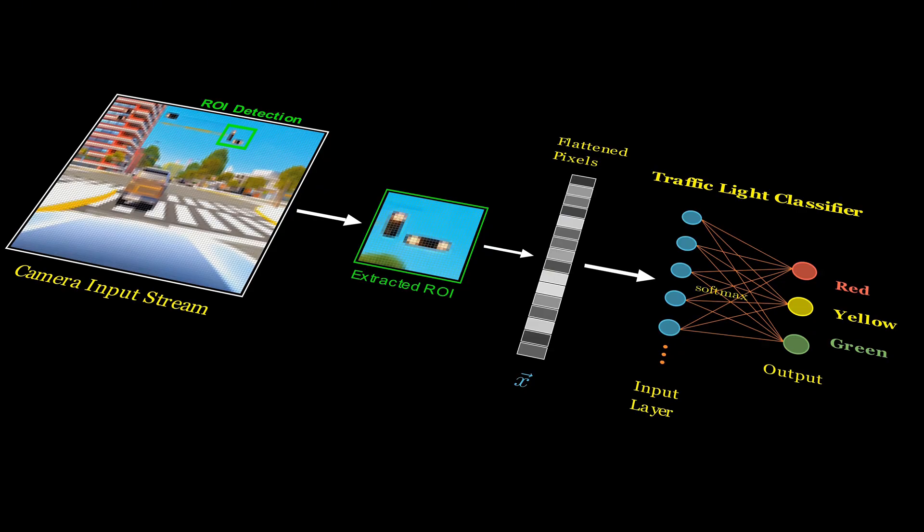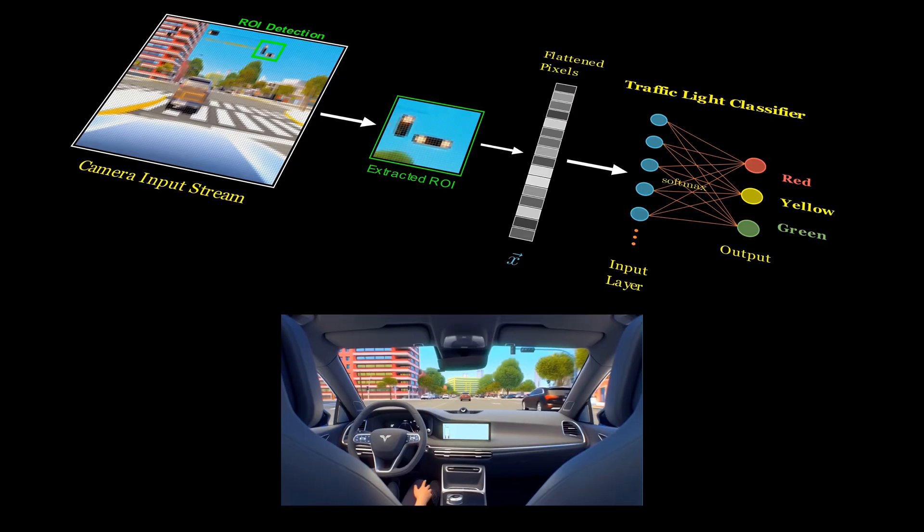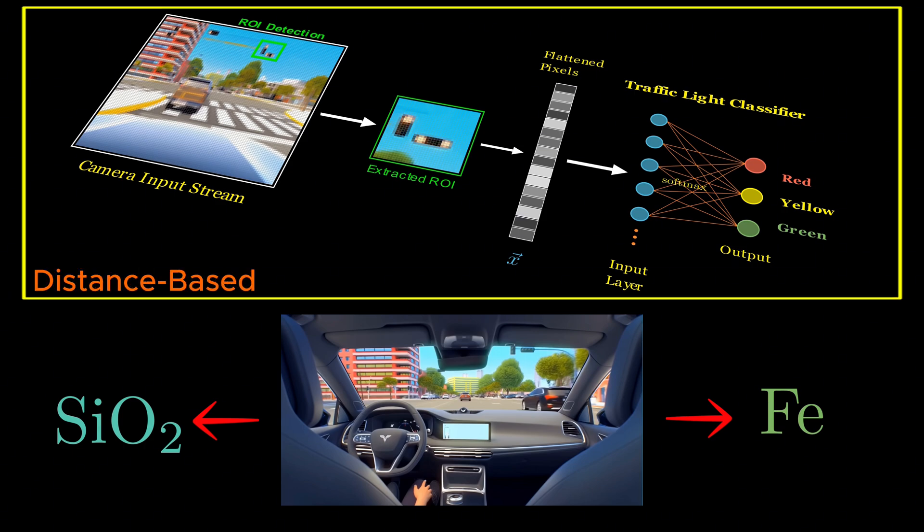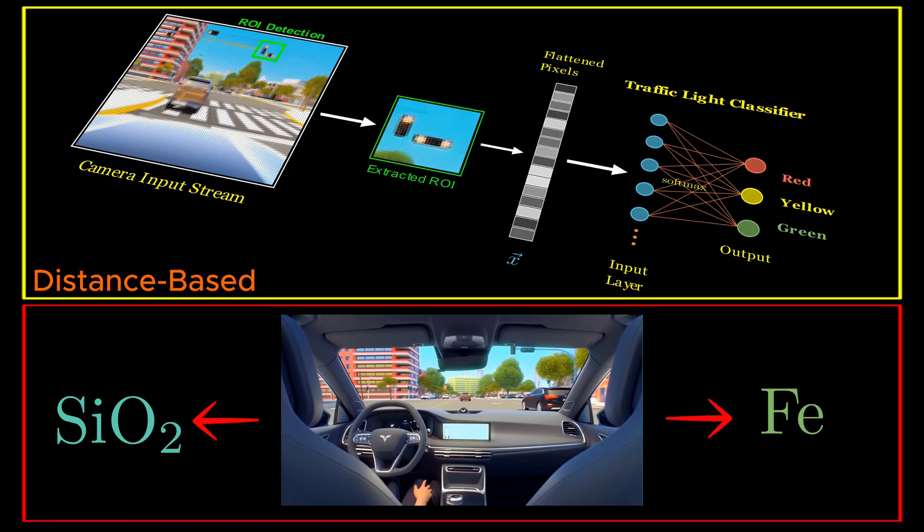But here's something that may surprise you: Did you know that even something as simple as determining whether the windshield of the car is made of glass or iron is also a classification problem? Now here's the twist I want you to consider. The car uses one kind of classification method to decide whether a traffic light is red or green. Meanwhile, physicists, when they classify something like whether a solid is glass or iron, use a totally different method. So if both data scientists and physicists are doing classification, yet they do it differently, what is the difference?